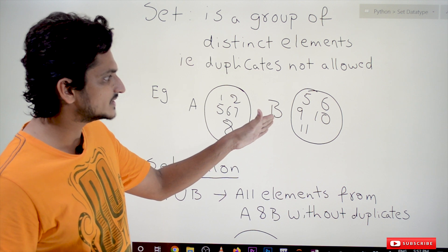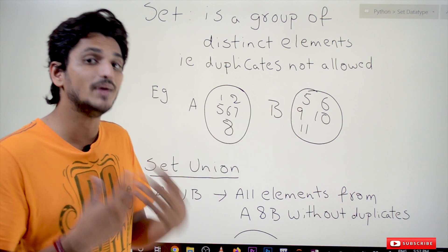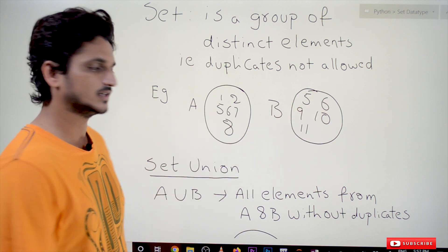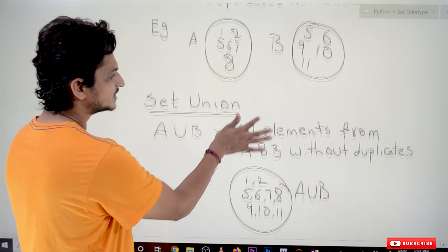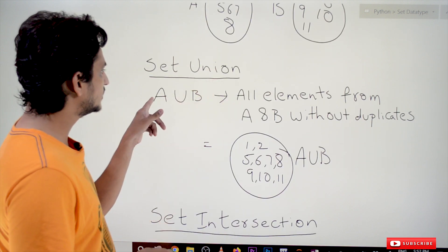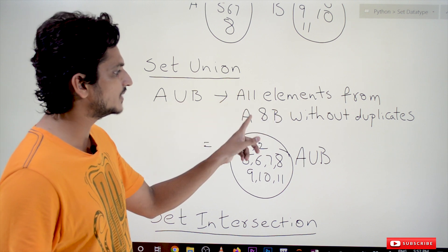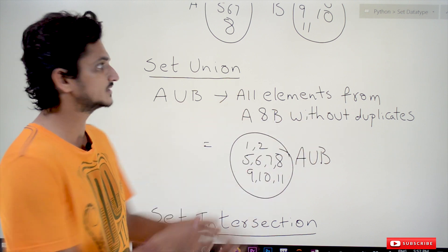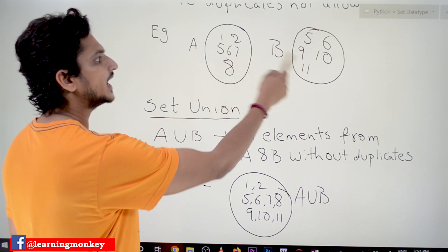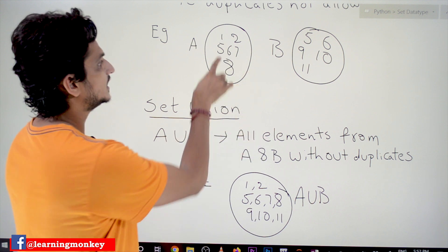Similarly, set b consists of elements 5, 6, 9, 10, 11. Duplicates are not allowed in the set. Different set operations include set union. Set union — a union b — gives all elements from a and b without duplicates.